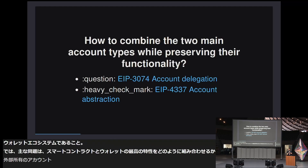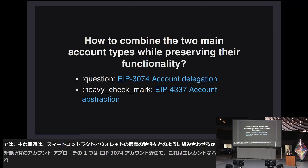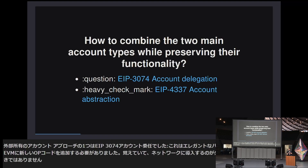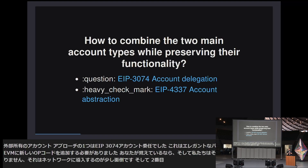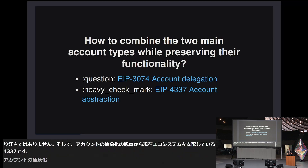One of the approaches was EIP 3074 account delegation. It was an elegant version but it required new opcodes added to the EVM, and we don't really like that — it's a little hassle to introduce to the network. The second one that currently rules the ecosystem in terms of account abstraction is EIP 4337, which has a second mempool for user operations.